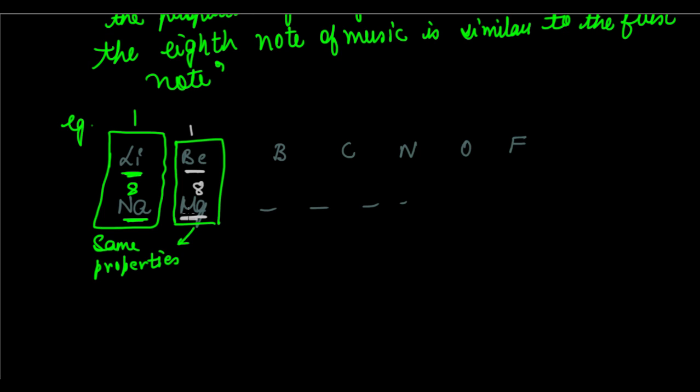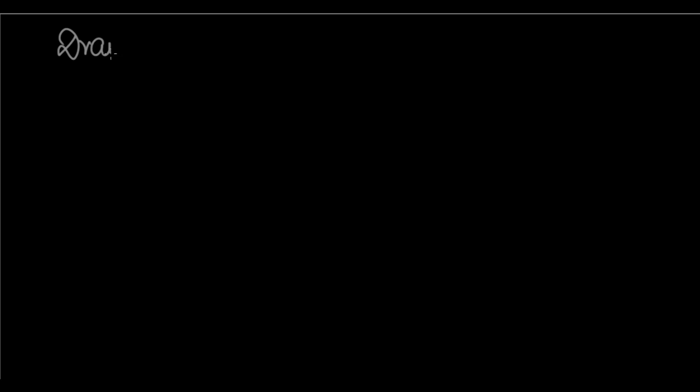This is an example to explain Newlands' Law of Octaves. This was a very beautiful concept because it formed a foundation for the formation of the modern periodic table and even Mendeleev's periodic table. This was a very good attempt, but the drawbacks were there, which led to its rejection. So the drawbacks of this classification.